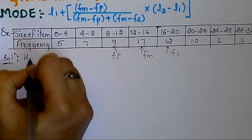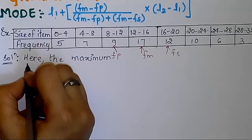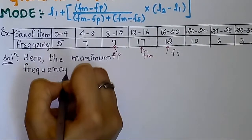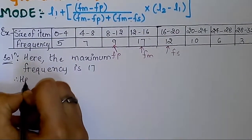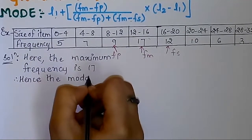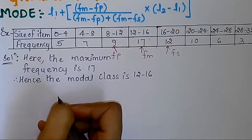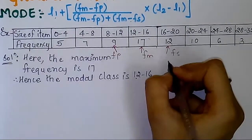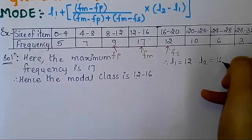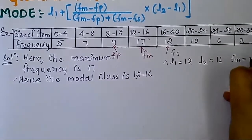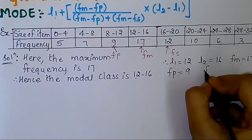Now we have assigned all the data we need in the given formula. The maximum frequency is 17, so our modal class is 12 to 16. The lower limit l1 will be 12 and the upper limit l2 will be 16. fm will be 17 — the maximum frequency — fp will be 9, the preceding frequency of the modal class, and fs will be 12, the succeeding class frequency.